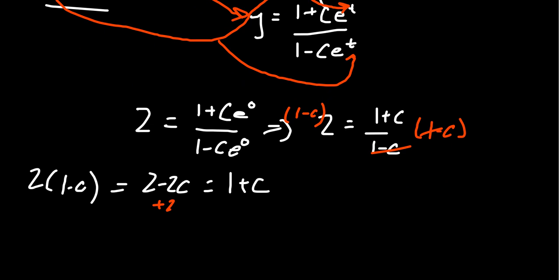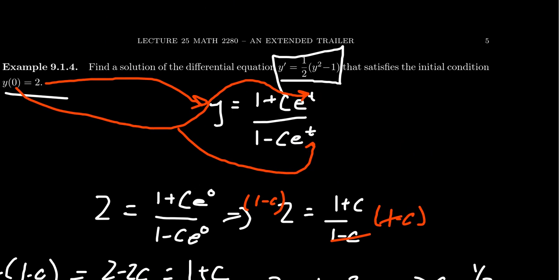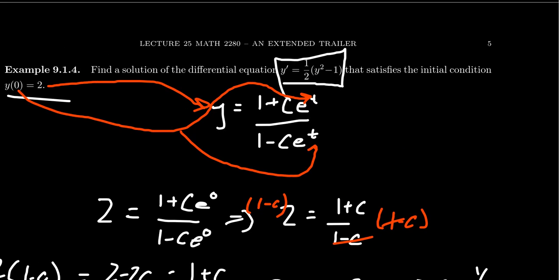Adding some like terms, we're going to add 2c to both sides. We're going to subtract 1 from both sides. We end up with 1 on the left-hand side, and we're going to get 3c on the right-hand side. In which case, then we see that c should equal 1/3.